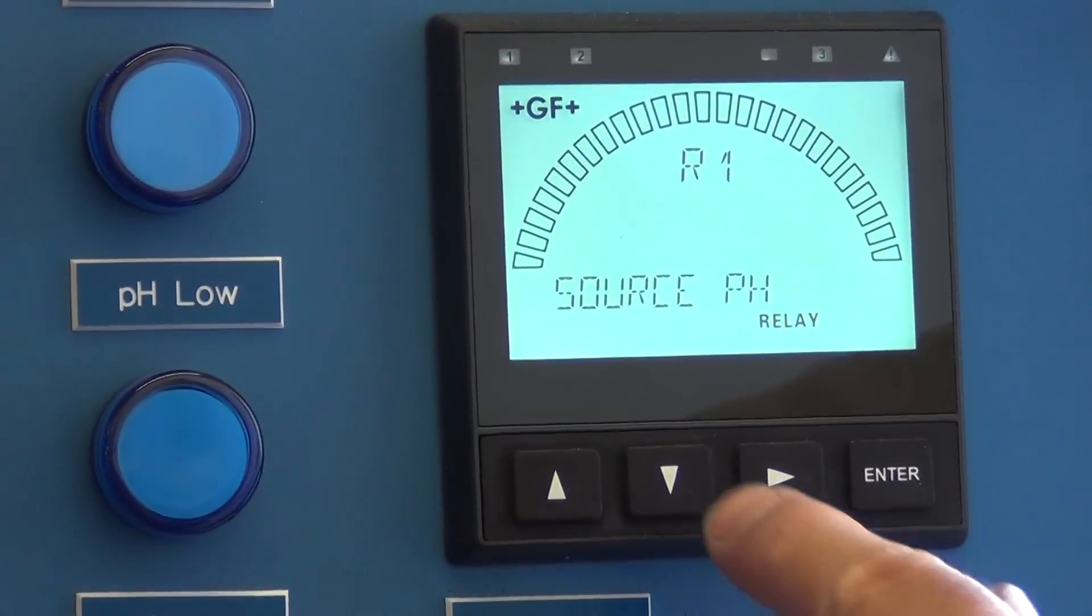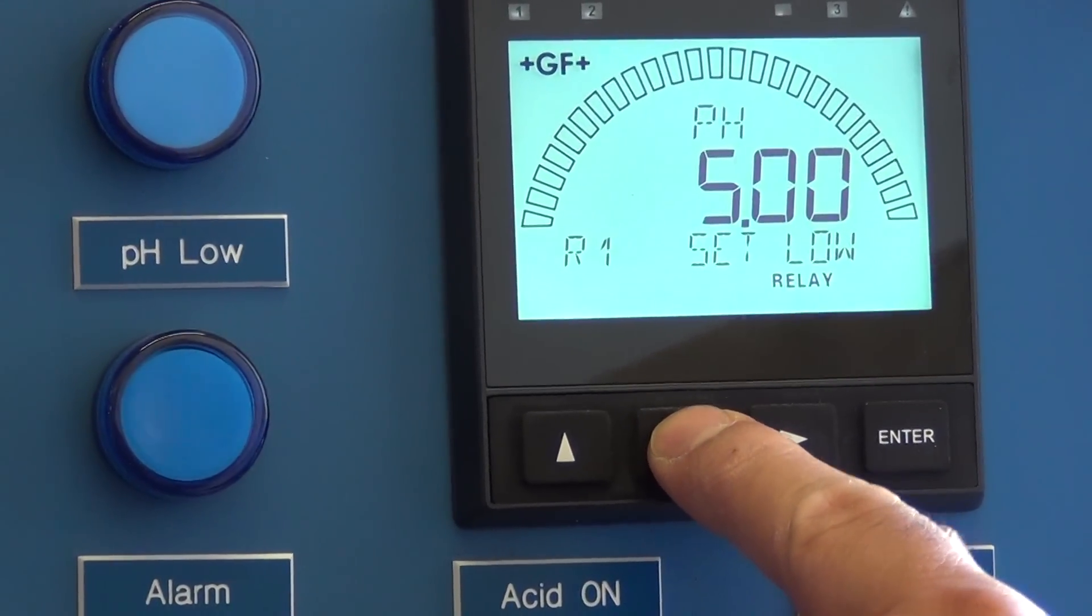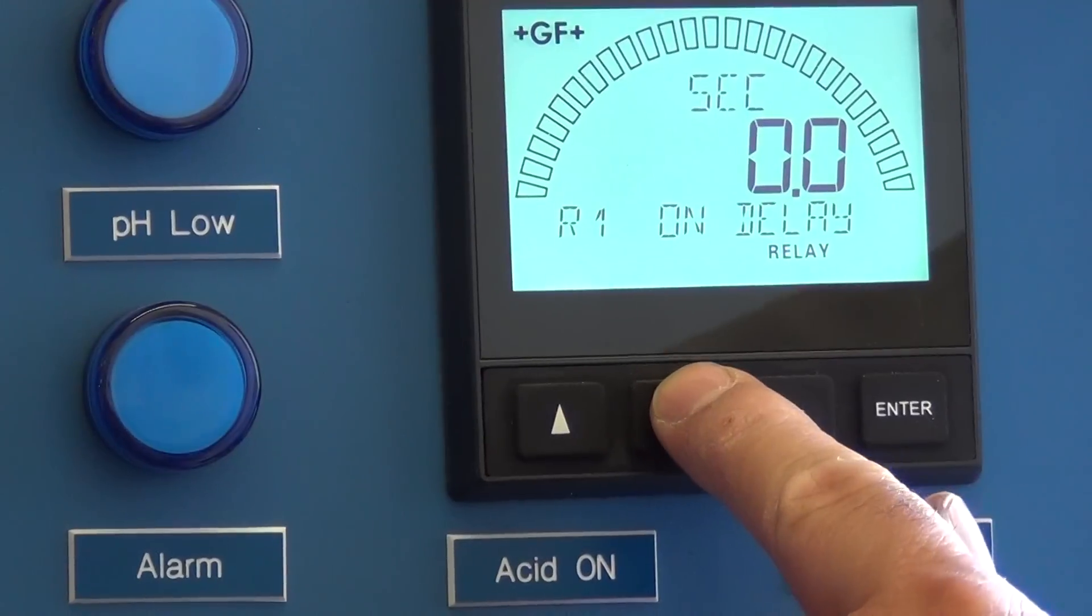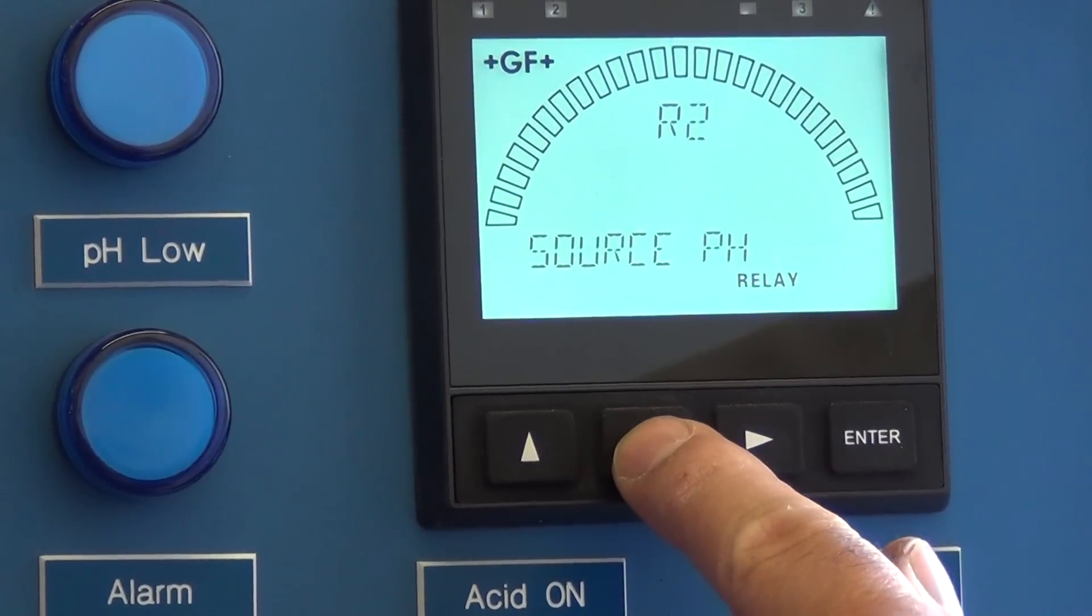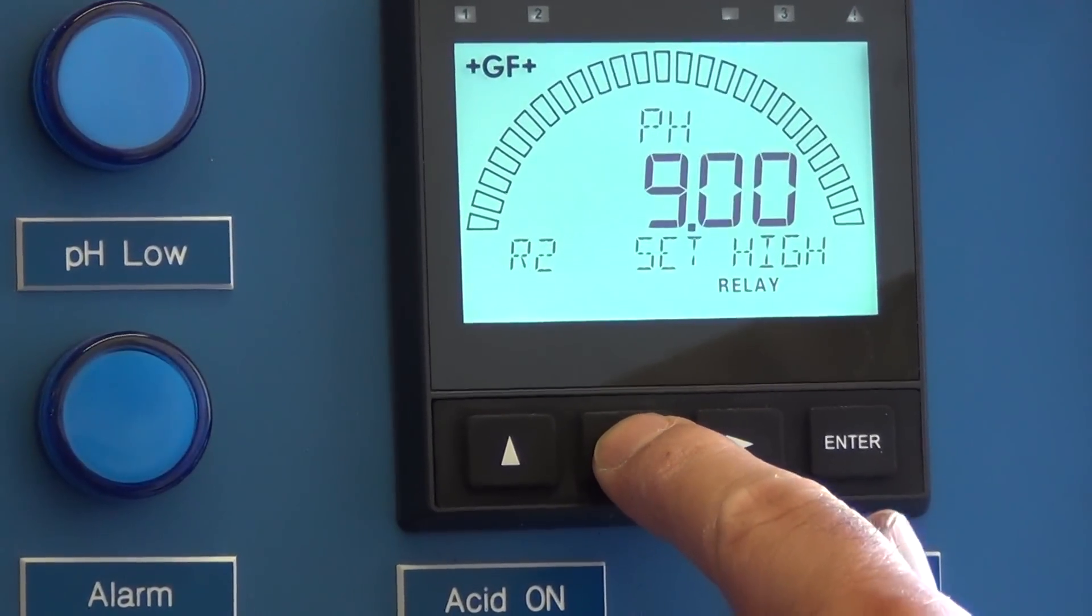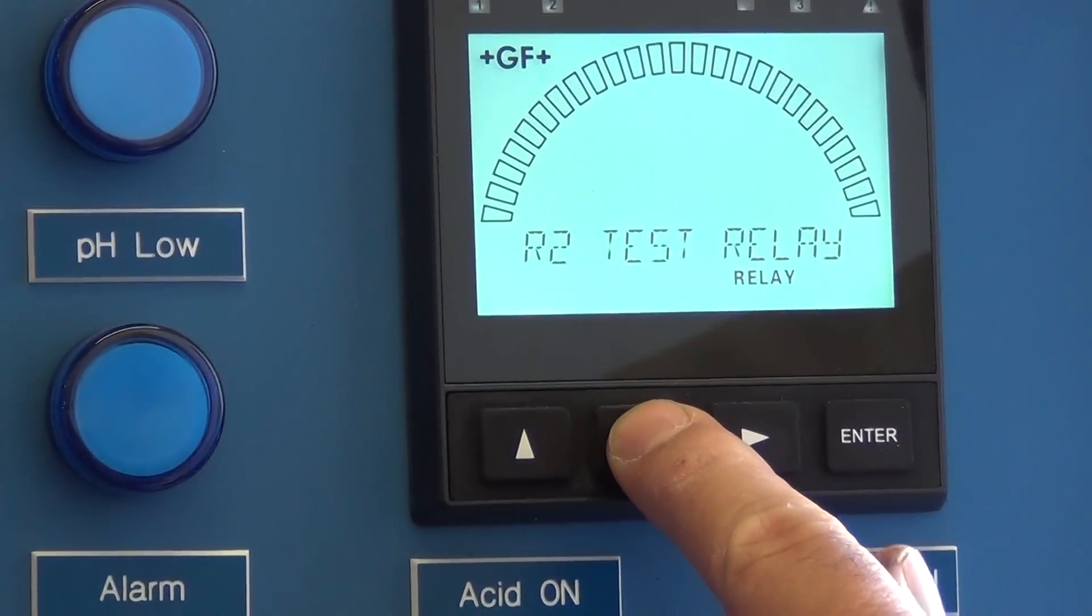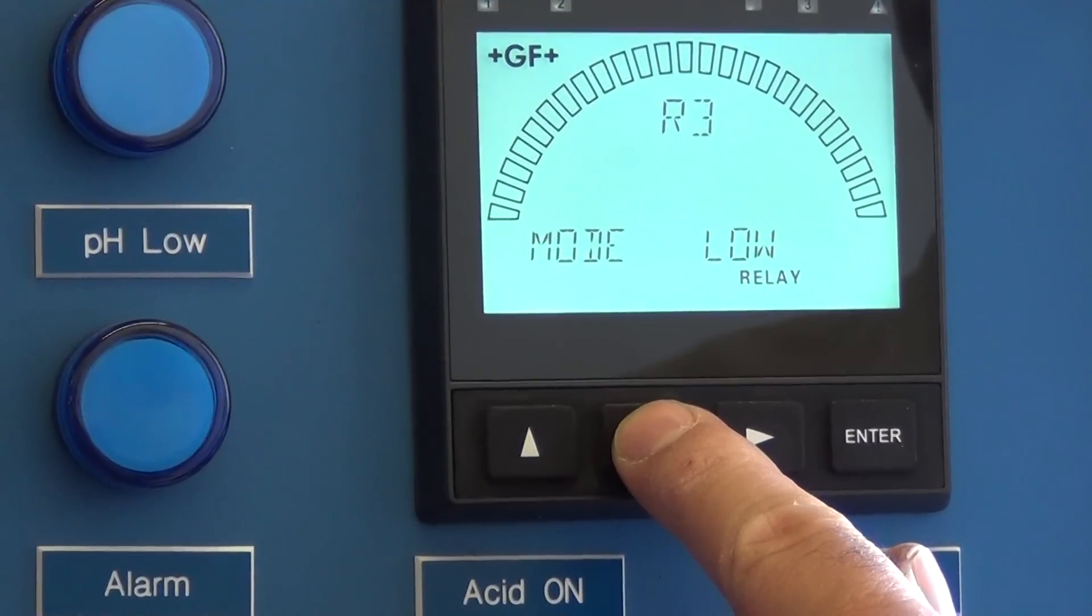Caustic pump is R3. R1 sets high and low pH alarms, R2 is the acid pump, and R3 is the caustic pump.